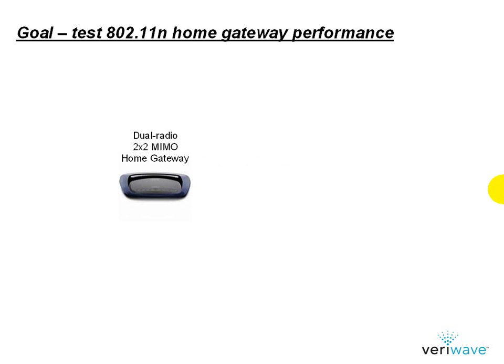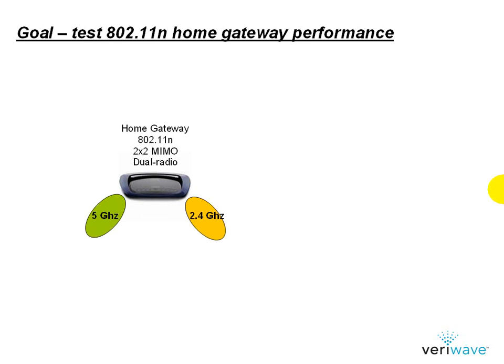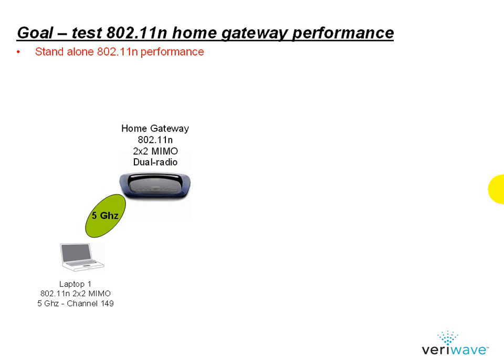In this example, we are testing a home gateway. This device supports 802.11n 2x2 MIMO and has dual radios, one in the 2.4 GHz band and one in the 5 GHz band. The goal is to test, first, the performance we can expect from an 802.11n laptop when connected to the gateway in the 5 GHz band.